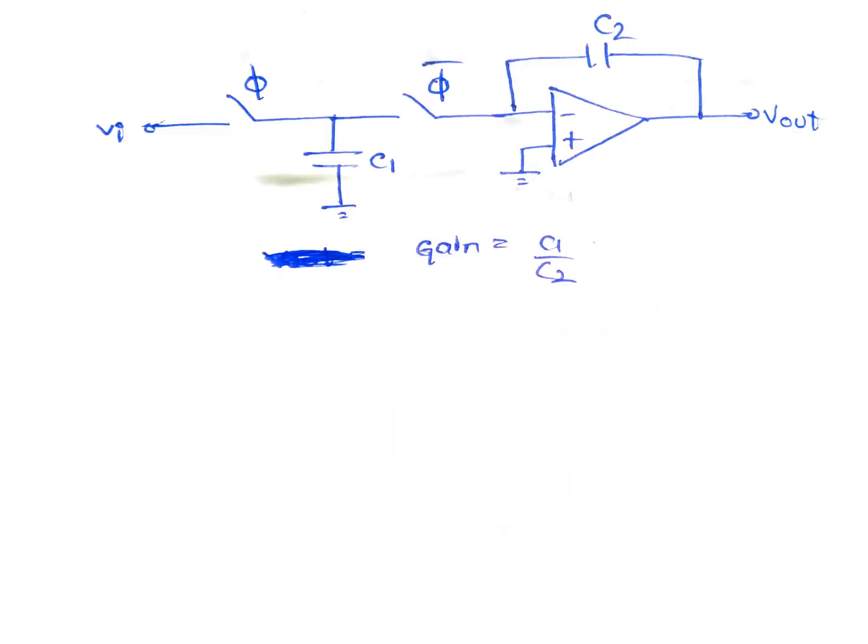This is the basic circuit of switched capacitor integrator. During phi phase sampling takes place and during phi bar phase integration takes place. This is the same as phi bar switch behaves like a resistor when phi bar switch is closed. It looks like a basic integrator, op-amp based basic integrator circuit. Gain of this circuit is equal to C1 by C2.